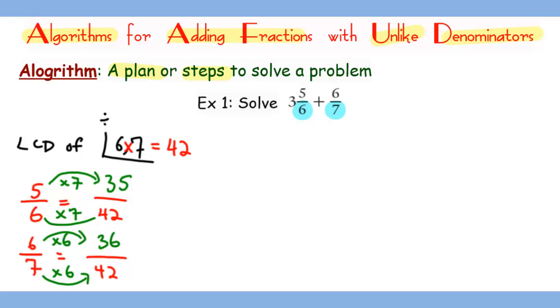The next step is to rewrite the question with a common denominator. So we have 3 and 35/42 plus 36/42, and the first thing you should add is the whole number, which in this case there's only one number so we have a 3 here.